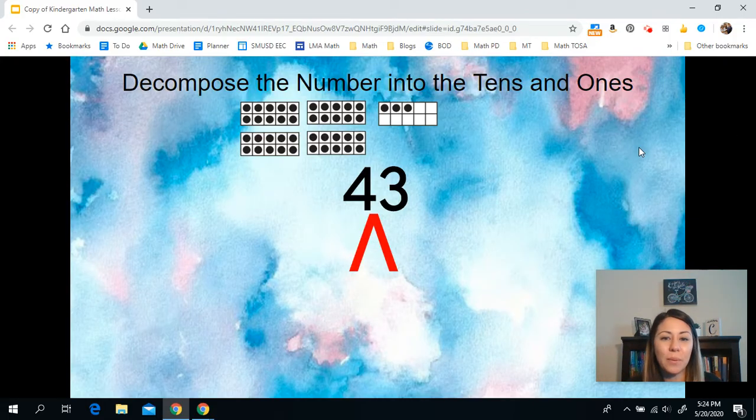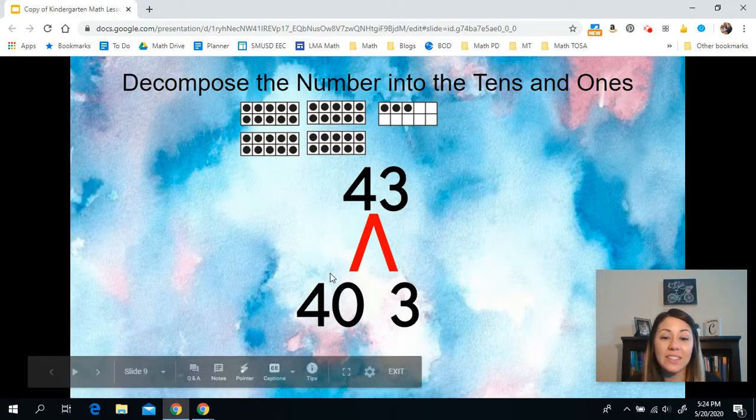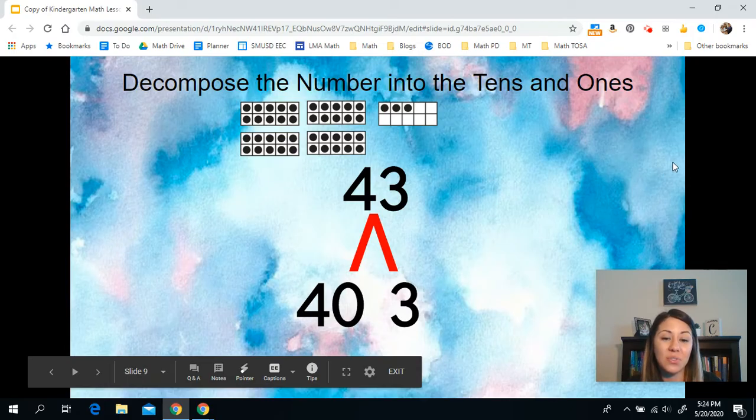Here we go. Break apart 43. You have 40 and three. So the tens are 40 and the ones are three extra ones.